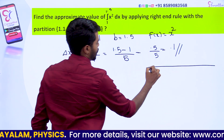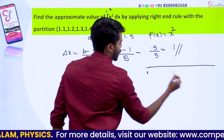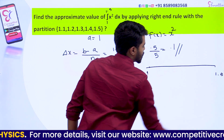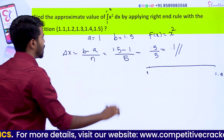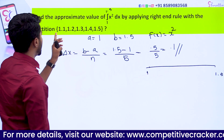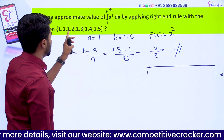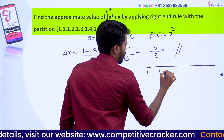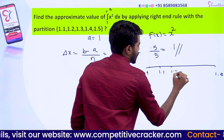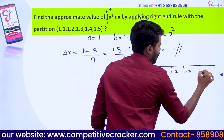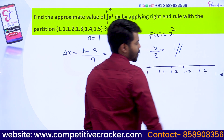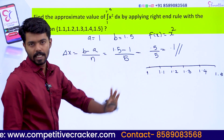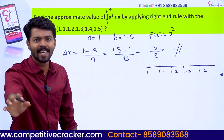For the interval 1 to 1.5, the partition values are: 1.1, 1.2, 1.3, 1.4, 1.5.